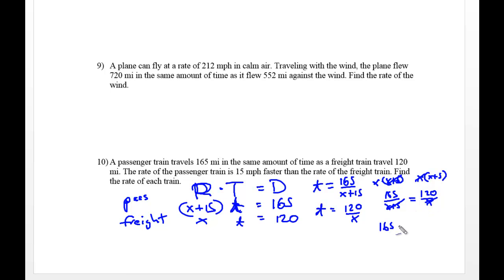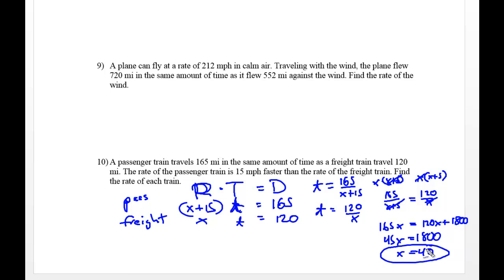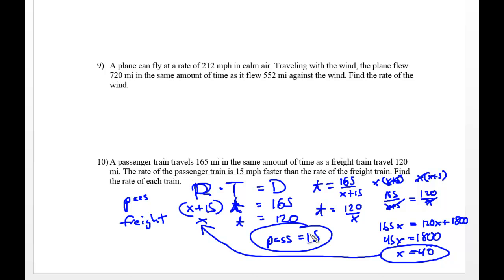Since these are both equal to each other, we cross multiply or multiply both sides by x and x plus 15. 650x equals 120 times (x plus 15), giving 120x plus 1800. Subtracting 120x from both sides gives 530x — wait, 650 minus 120 is 45x, divided into 1800 gives x equals 40. That's the freight train at 40 mph. The passenger train is 15 faster: 40 plus 15 equals 55 mph. Thank you for watching — see me in class or shoot me an email.